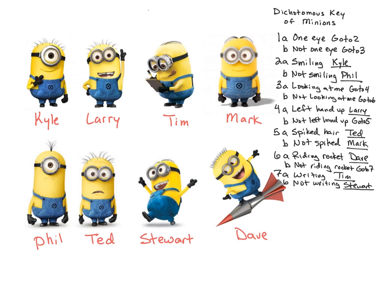Okay, so we're not quite done. The last thing we're going to do is key out each one of the individuals using our key. So let me show you how we do this. The first thing we do is look at Kyle and start at the top of the key. Kyle — you have to choose one A or one B. Kyle has one eye, so we're going to use one A. It says 'go to two.' If we go to two, it says smiling or not smiling. You'll see that Kyle is smiling. So Kyle is keyed out: one A, two A. And Kyle has been keyed out.